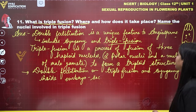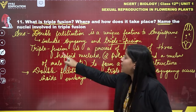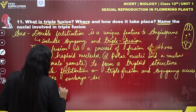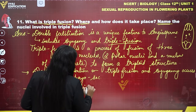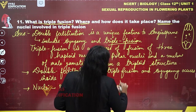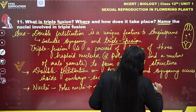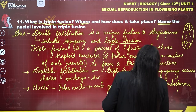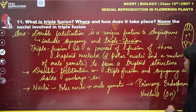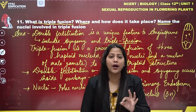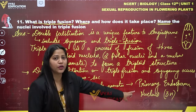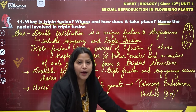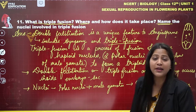For the third part — name the nuclei involved in triple fusion — the nuclei are the two polar nuclei and the nucleus of the male gamete. When these fuse, they give rise to the primary endosperm nucleus, which is triploid in nature as it is composed of the fusion of three haploid nuclei. This is the complete solution of question number 11.